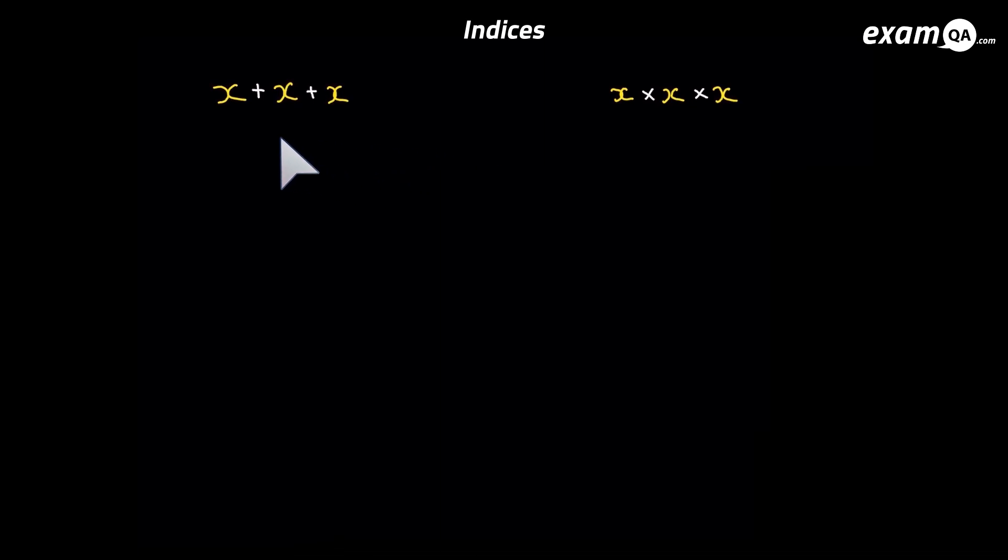Looking at the first one we've got x plus x plus x. Now you should know what that does and I'll give you a chance to say it. You should have said 3x, three lots of x. So whenever you see something like this 3x it just means 3 times x. Now have a look at the next one.